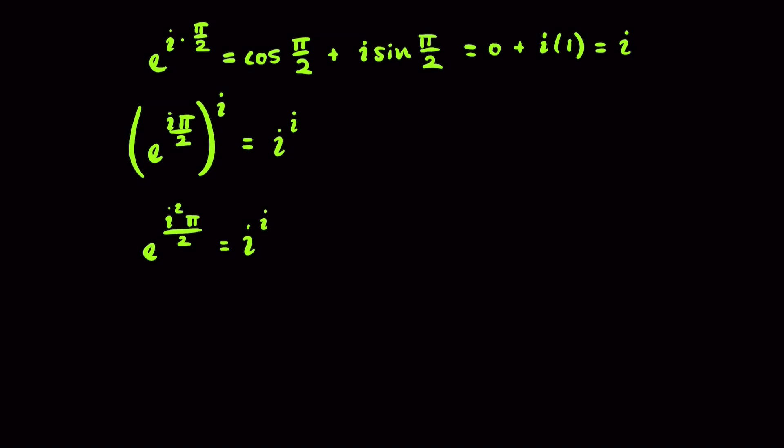Well, what is i squared? i is the square root of negative 1, so i squared is just negative 1. Therefore, e to the negative pi over 2 is equal to i to the i.